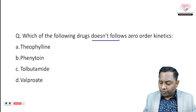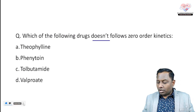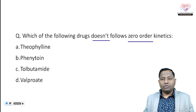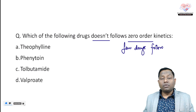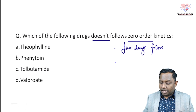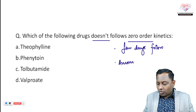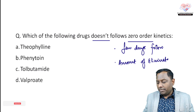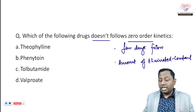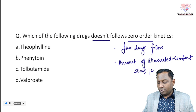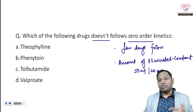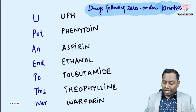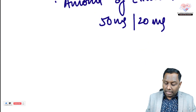Third question: which of the following doesn't follow zero-order kinetics? Important points about zero-order kinetics: very few drugs follow zero-order kinetics. The amount of drug eliminated is constant — it could be 50 mg or 20 mg, but that fixed amount stays constant throughout. Three important parameters to remember in zero-order kinetics: rate of elimination, clearance, and half-life.